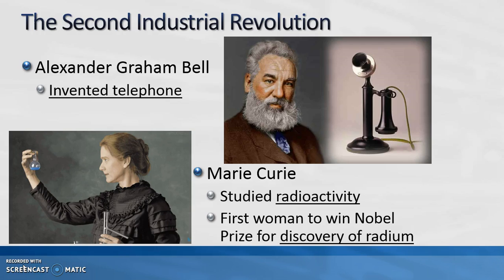Alexander Graham Bell invents the telephone at this time, and Marie Curie becomes the first woman to win the Nobel Prize for her work with radioactivity and the discovery of a new element, radium.